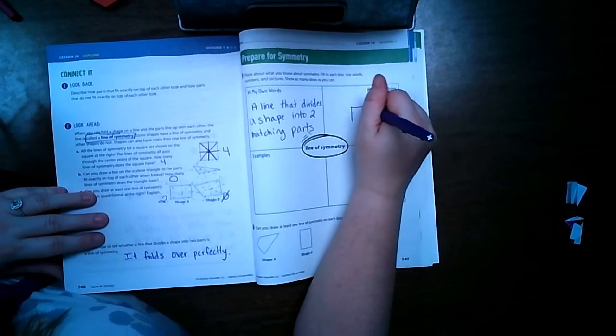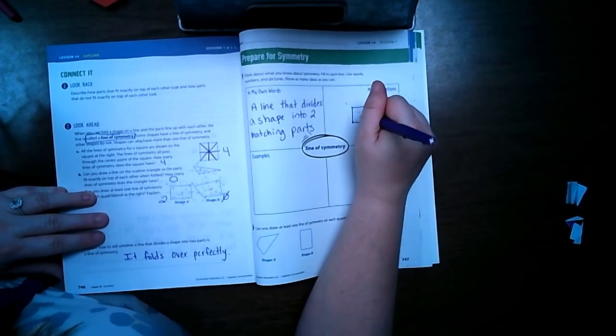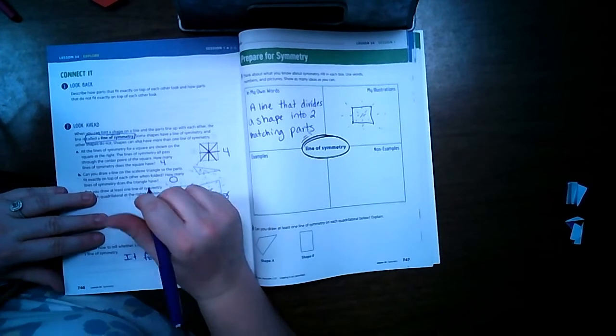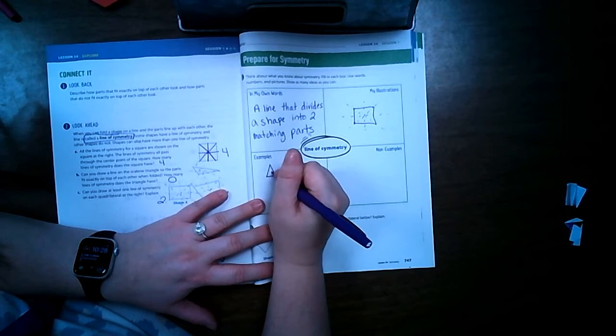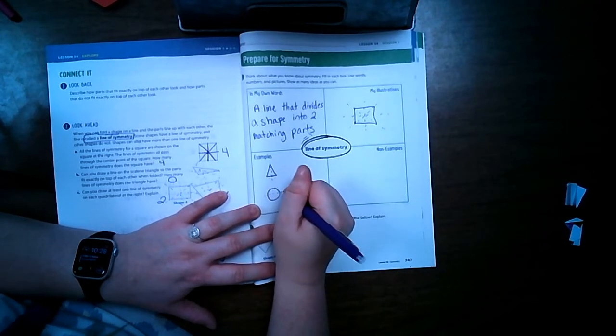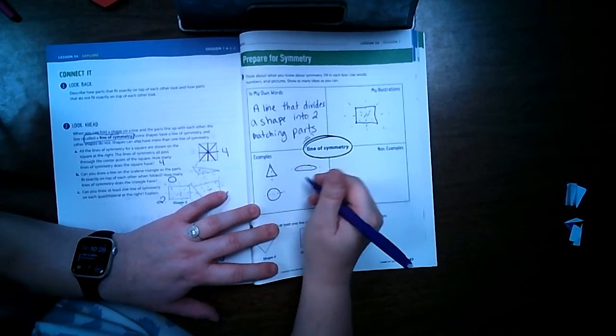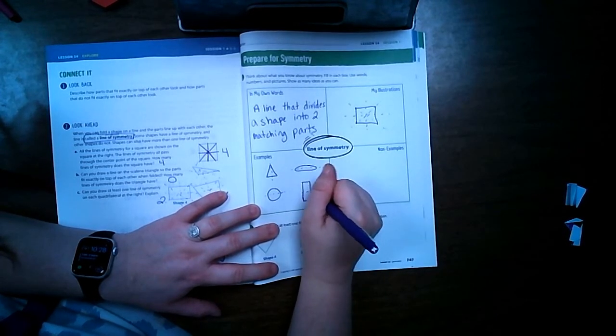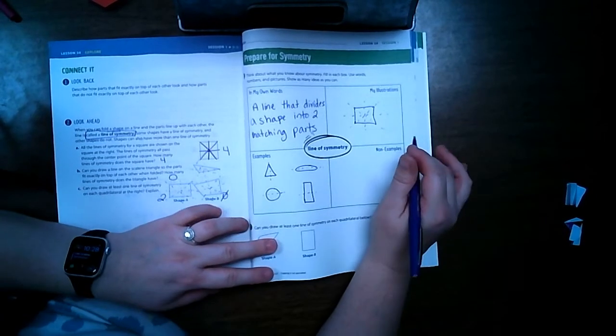So a picture of that, we could draw a square and show all of the lines of symmetry for it. We can show some other shapes. My drawings are not perfect, so don't judge me, but I'm trying. Okay. Some things that are not symmetrical.